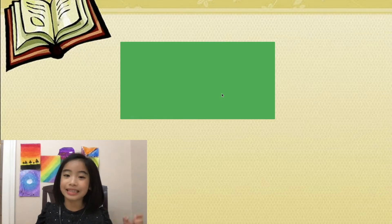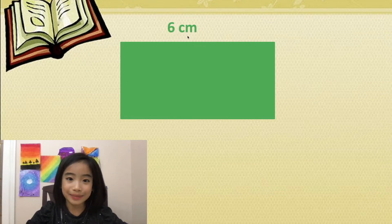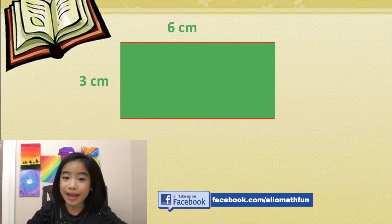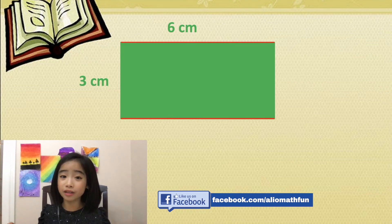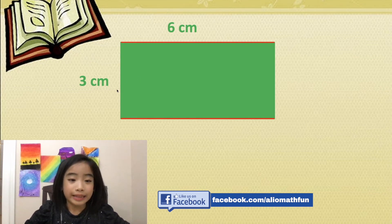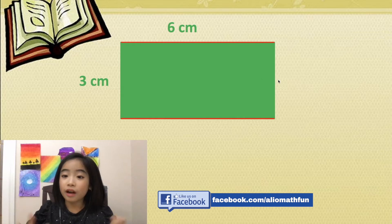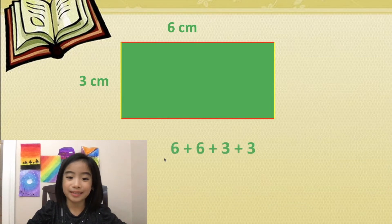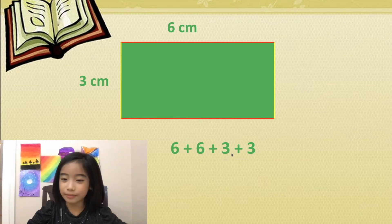Lastly, let's look at this green rectangle. The longer side is six centimeters and the shorter side is three centimeters. Now let's find out its perimeter. We know that the top and the bottom sides are equal, so the bottom side is also six centimeters, and the left side and the right side are also equal, so the right side is also three centimeters. All together we have six plus six plus three plus three equals 18 centimeters.